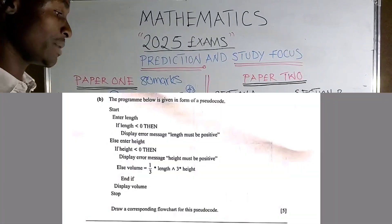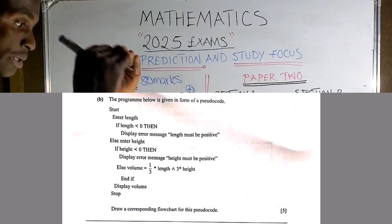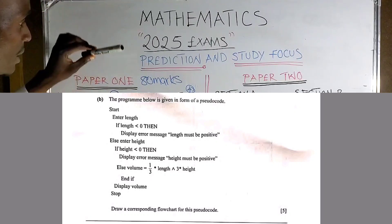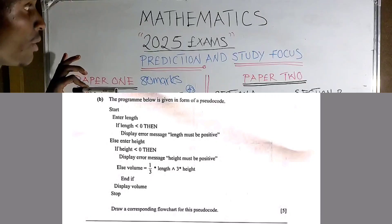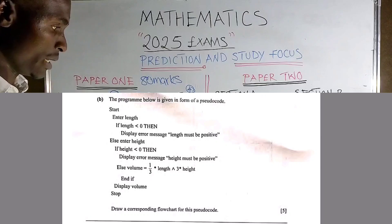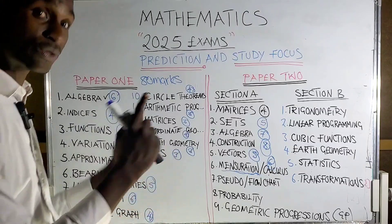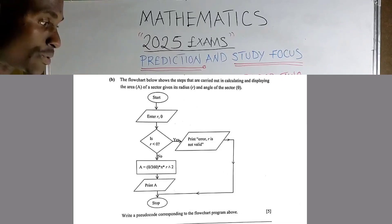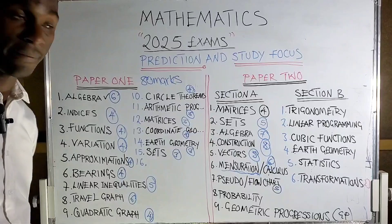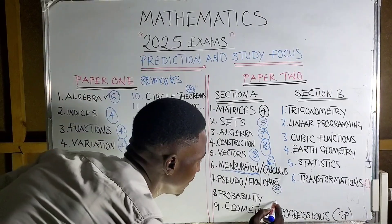Pseudo code and flowchart: a pseudo code is a computer program — a step-by-step procedure, an algorithm, used to arrive at a solution. You will be given a pseudo code and asked to convert it to a flowchart, or a flowchart converted into pseudo code. This is straightforward and is usually five marks.